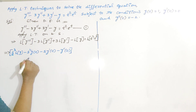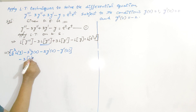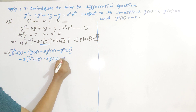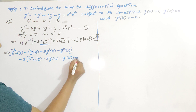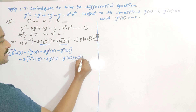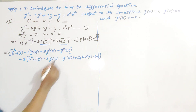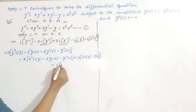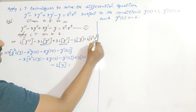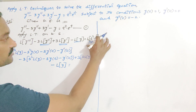Next, minus 3 times the formula for L{y''}: S² × L{y} minus S × y(0) minus y'(0). Plus 3 times the formula for L{y'}: S × L{y} minus y(0). And the final term is minus L{y}. The right side is in the form of e to the power at times f(t), so we apply the first shifting theorem to evaluate its Laplace transform.